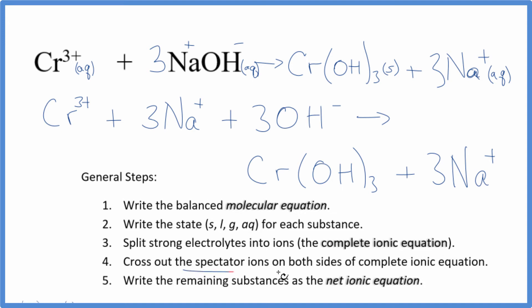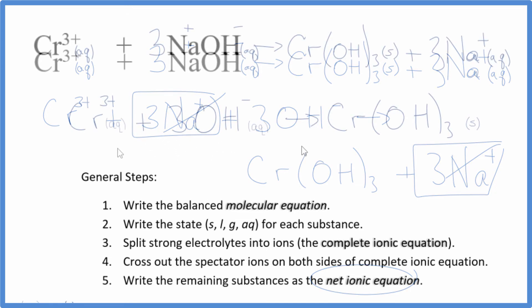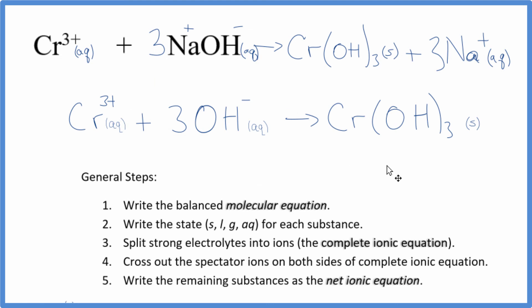Now we can cross out the spectator ions, they're on both sides. We look, the only thing that's the same on both sides are these three sodium ions. So we can get rid of those, and this will be the net ionic equation for Cr³⁺ plus NaOH. I'll clean it up and write the states in, and we'll have our net ionic equation. So this is the net ionic equation for chromium three plus, the chromium three ion plus sodium hydroxide.